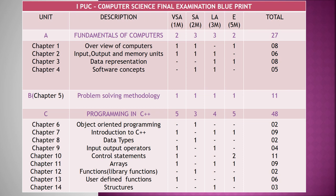Unit B covers Problem Solving Methodology. Here you will have one one-mark question, one two-mark question, one three-mark question, and one five-mark question, totaling eleven marks. Unit B has only one chapter — Problem Solving Methodology — with no sub-chapters.